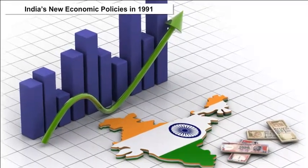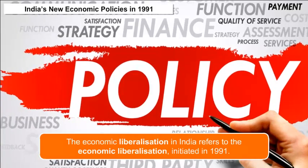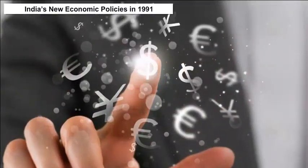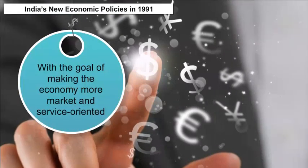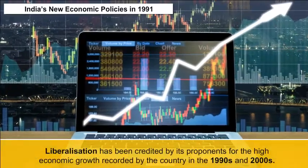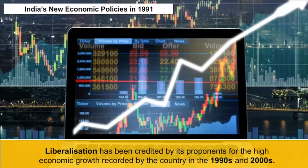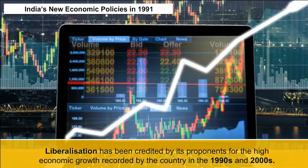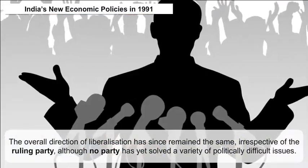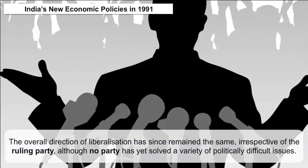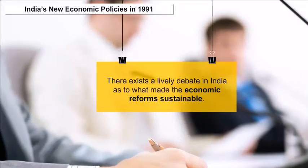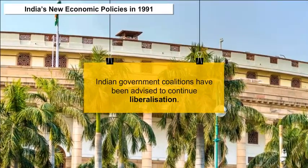India's New Economic Policy in 1991: Economic liberalization in India, initiated in 1991, aimed at making the economy more market- and service-oriented and expanding the role of private and foreign investment. Liberalization has been credited by its proponents for the high economic growth recorded by the country in the 1990s and 2000s. The overall direction of liberalization has since remained the same irrespective of the ruling party, although no party has yet solved a variety of politically difficult issues. There exists a lively debate in India as to what made the economic reforms sustainable, and government coalitions have been advised to continue liberalization.